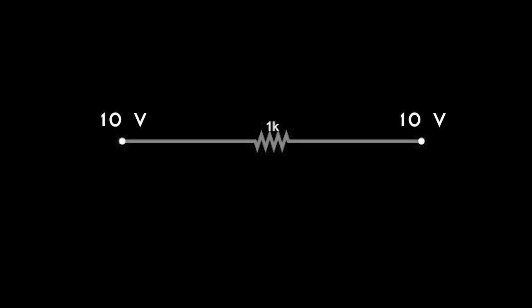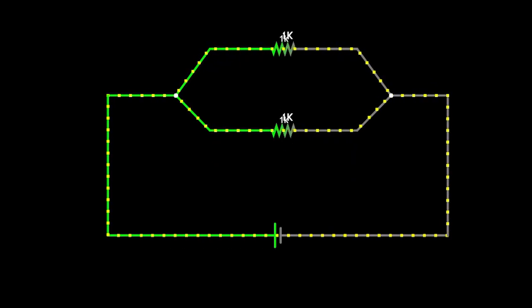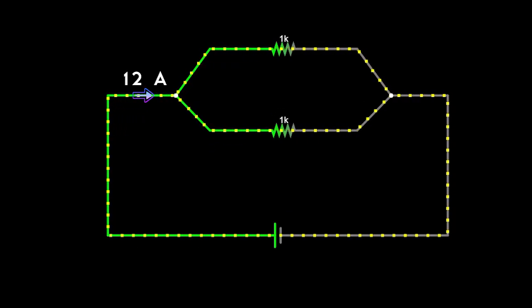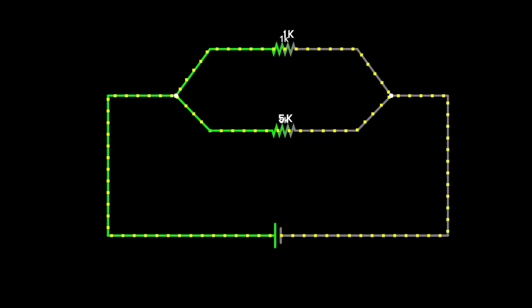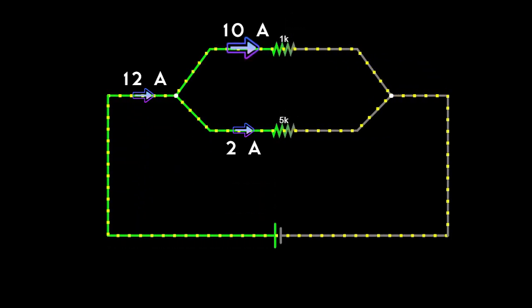If we have two equipotential points, current cannot flow across them since current always flows from a higher potential to a lower potential. Secondly, if we have two equal resistors, the incoming current would divide equally because each path has the same resistance. If they were unequal, more current would flow through the lower resistance path.